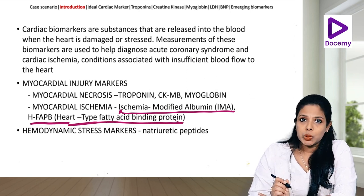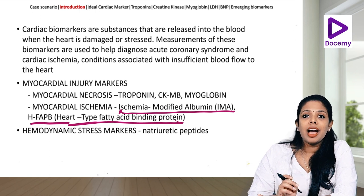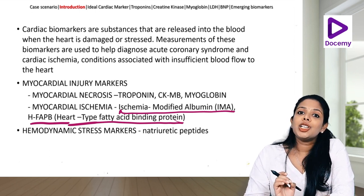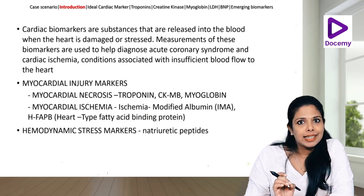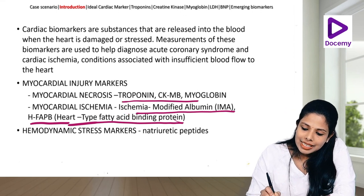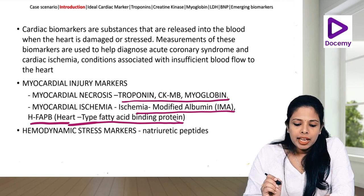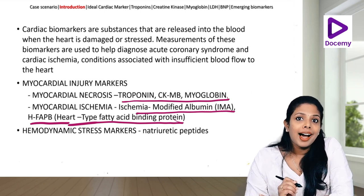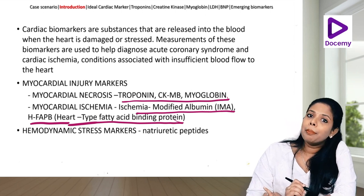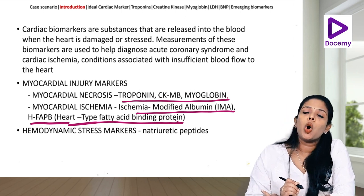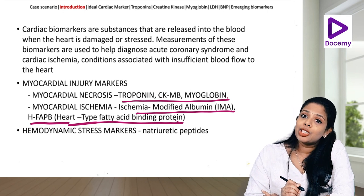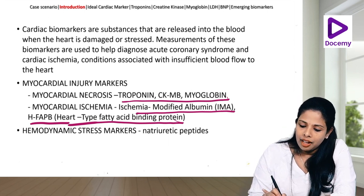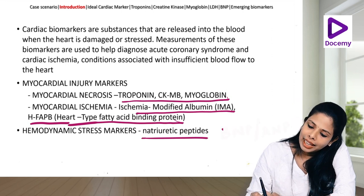Myocardial necrosis means that an irreversible ischemia has occurred leading to myocardial cell death and necrosis. For that we have troponins, CKMB, and myoglobin. Hemodynamic stress markers are released due to either pressure overload or volume overload to the ventricles, especially seen in heart failure — these are the natriuretic peptides, BNP and ANP.